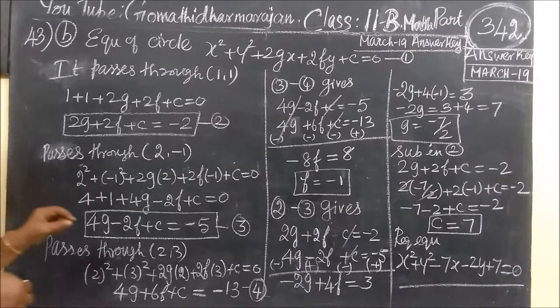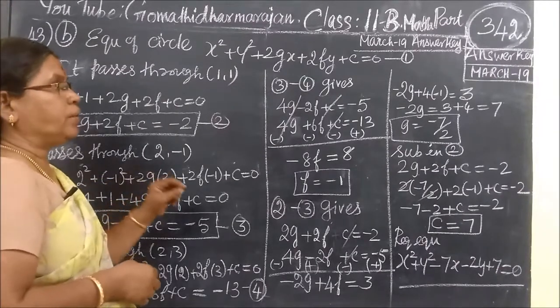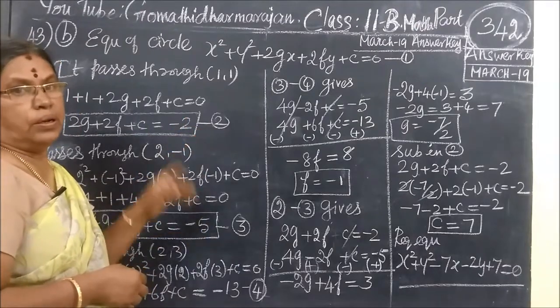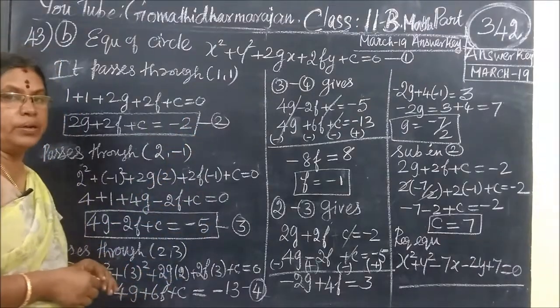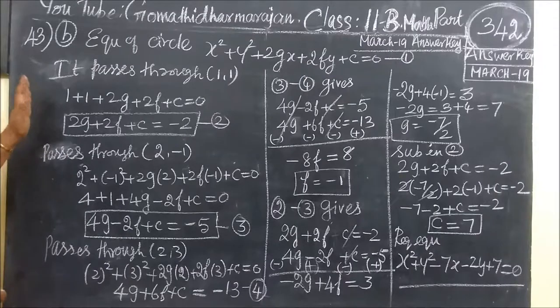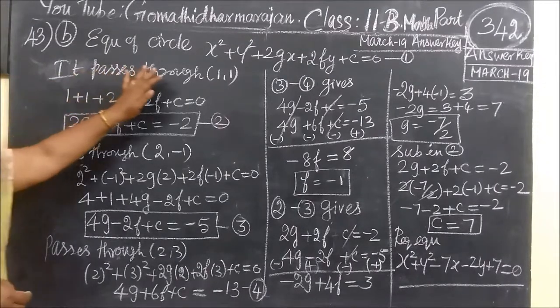That is G value, F value, C value. We have given equation of the circle. For that, we have given 3 points, and the 3 points through which the circle passes.